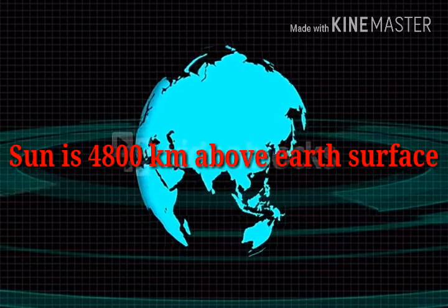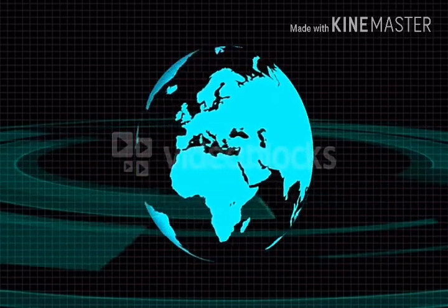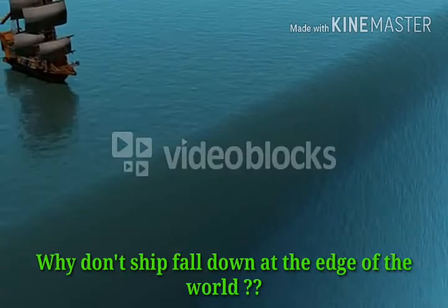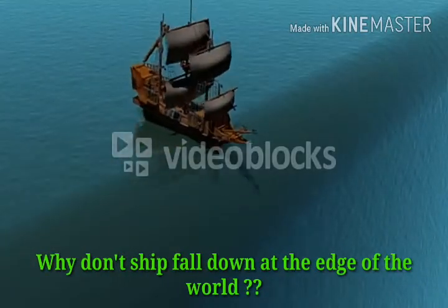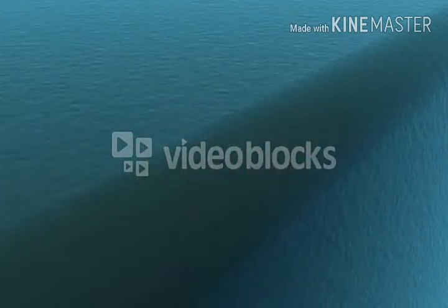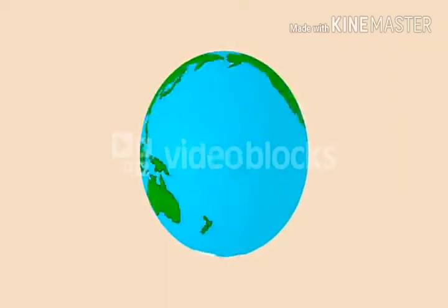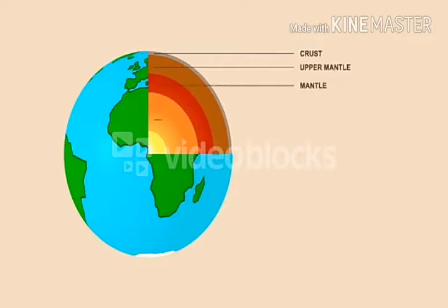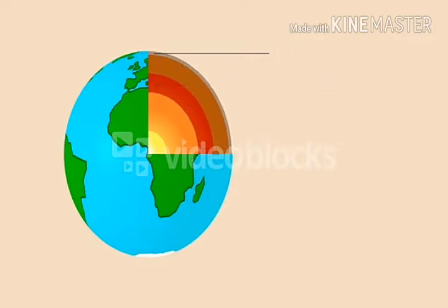But is this theory true? Let's take a look. If the earth is flat, at its edge, the sea would fall down, right? No, that's totally wrong. The earth is made of crust, upper mantle, outer core, and inner core. So how can it be spherical? Scientists never give a definite proof that the earth is spherical.